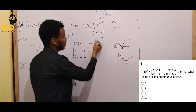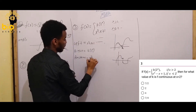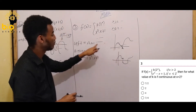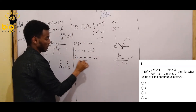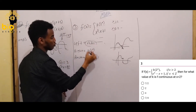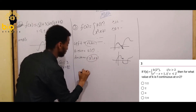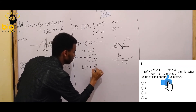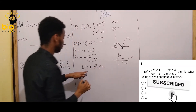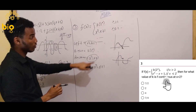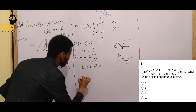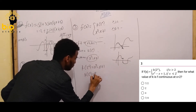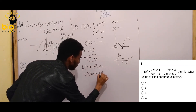x cubed minus x plus 1 — this is the value of x cubed minus x plus 1. So we compute: x cubed minus x plus 1, and also x squared times 2x equals x cubed. So x is equal to the expression over x, x to the power of 0.